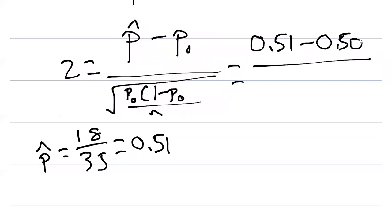And then we divide this by the square root of what we'll call the standard error. And here we're looking at P sub 0, or 0.50, times 1 minus P sub 0, divided by N. And remember N in this case was 35 because we're sampling 35 farmers.